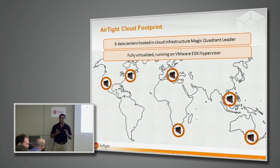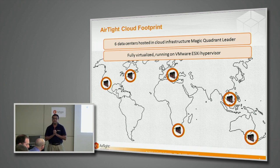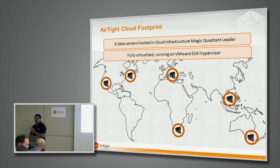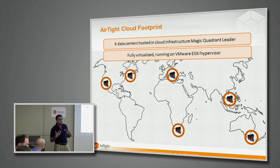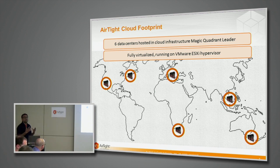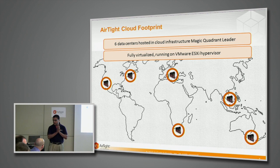Today we operate six data centers worldwide, hosted with an infrastructure provider that is in the Gartner Magic Quadrant leader. This is a very high-end cloud infrastructure where this management plane is hosted. One design choice we made from the beginning is that we will not build cloud on top of appliances and blades, but do a fully virtualized implementation. Today we really realize we made a good decision because the efficiency and economics of full virtualization are tremendous, passing value to the customer in terms of reduced cost. It runs on the VMware ESXi hypervisor platform.